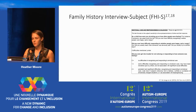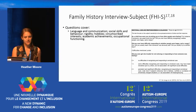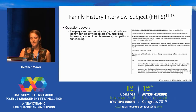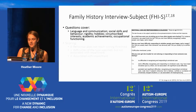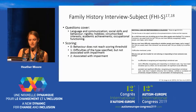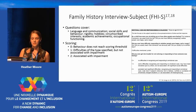There are many different ways of measuring the broader autism phenotype, but today I'm going to be talking about the Family History Interview. This is a semi-structured interview that looks at both childhood and adult functioning and covers questions to do with language and communication, social skills, rigidity, and circumscribed interests, among other things. It scores between zero and two, with zero being behavior that doesn't reach threshold, a score of one being showing a trait but not associated with impairment, and a score of two being associated with impairment.